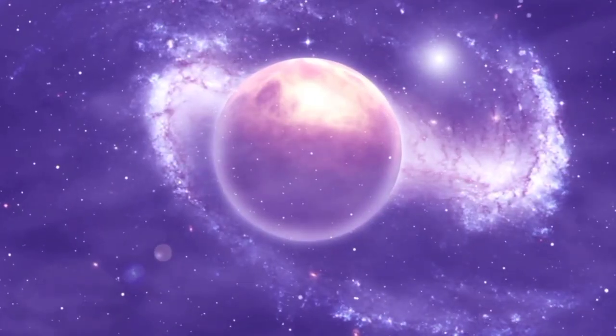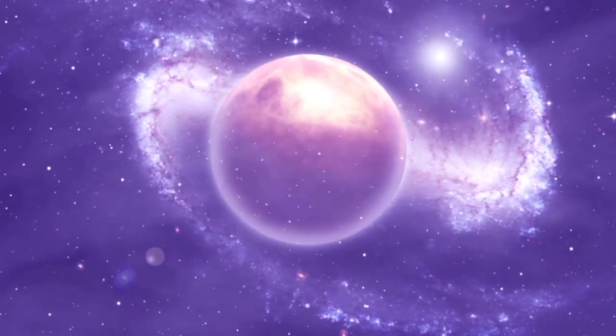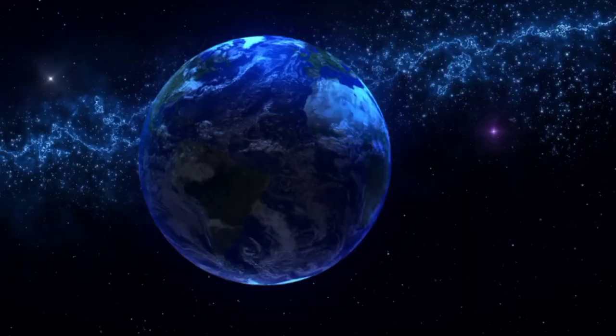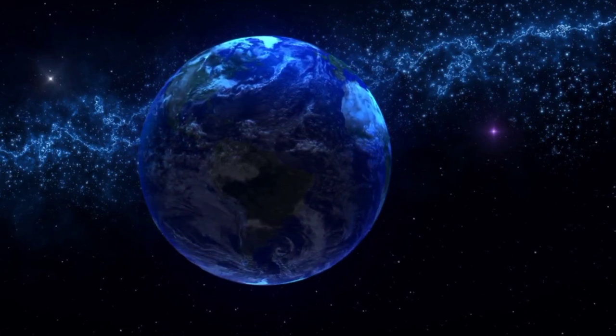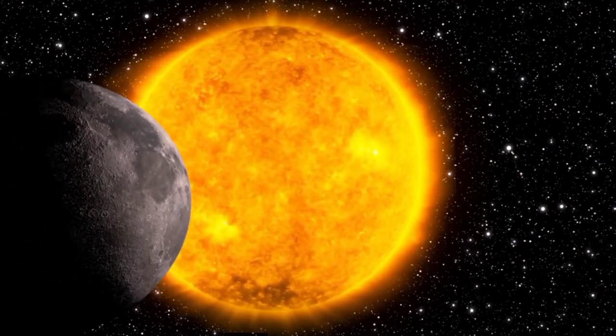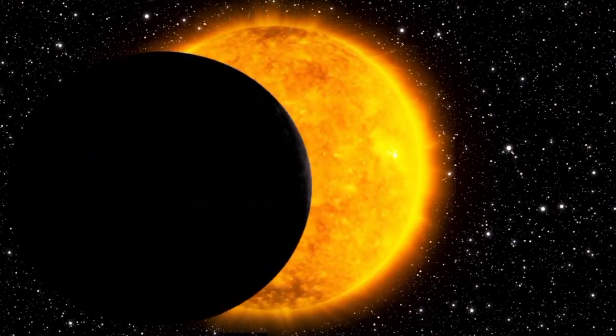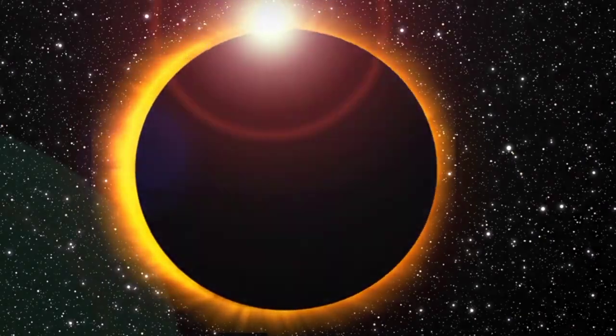Pluto's journey around the Sun is unlike that of any other planet in our solar system. It takes a remarkable 248 years to complete a single orbit. Since its discovery in 1930, it has not yet finished one full revolution. Yet the story doesn't end there.